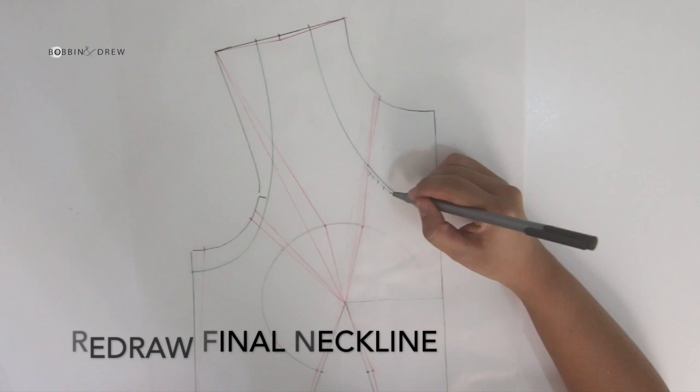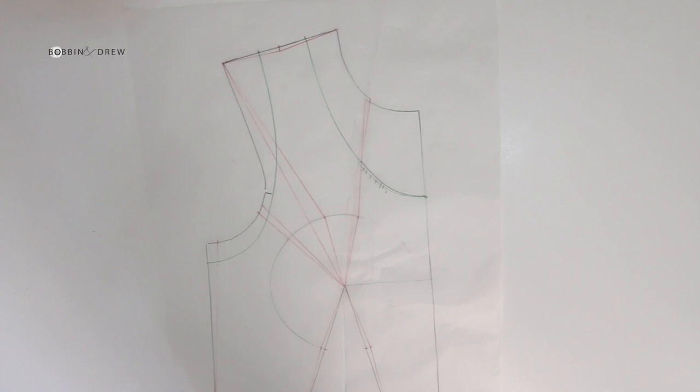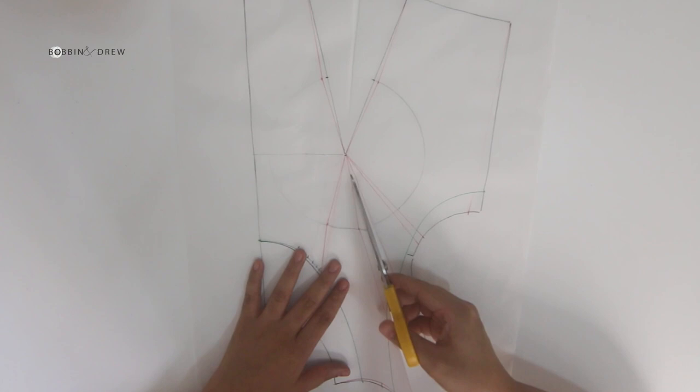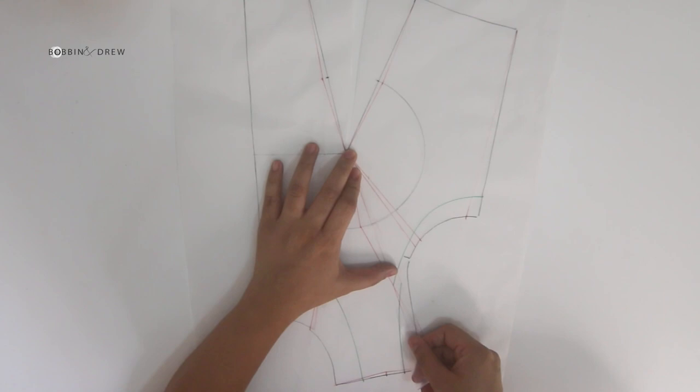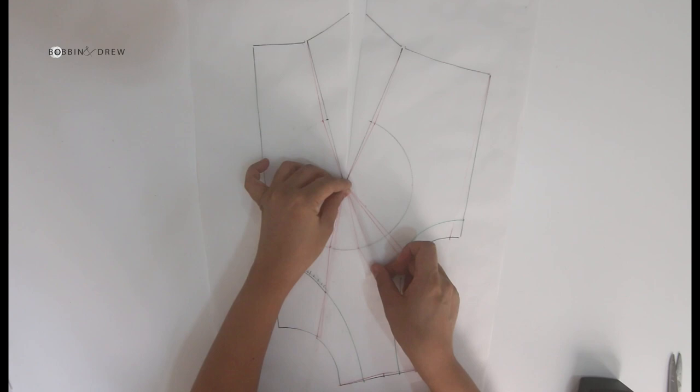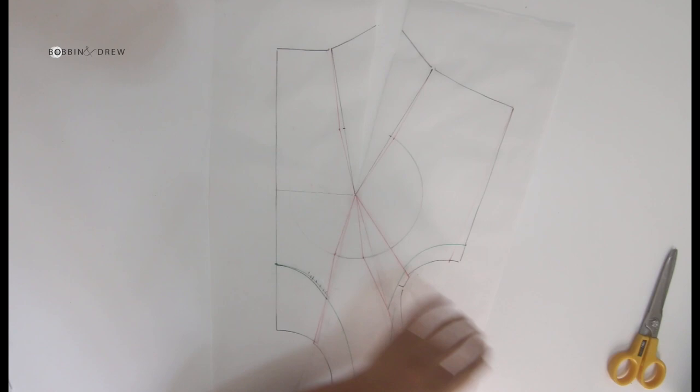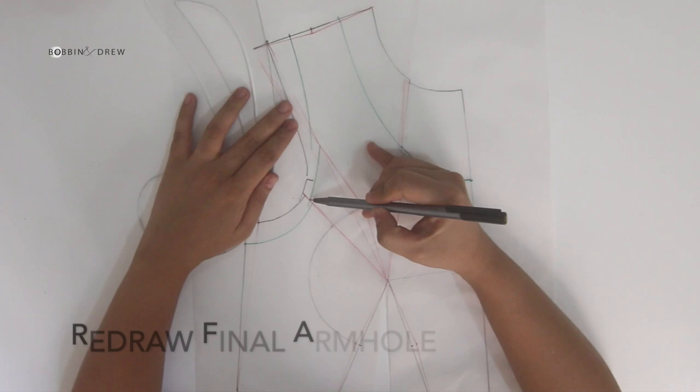Next we do the same process on contour guides number 2 and 3 wherein we just cut along the straight lines of the contour guides and we tape it closed. And use a French curve to redraw the final armhole.